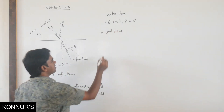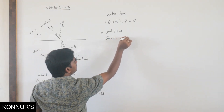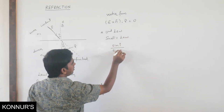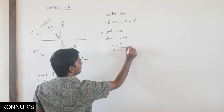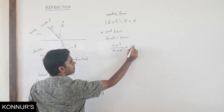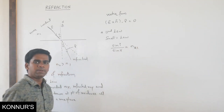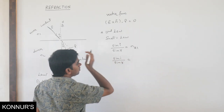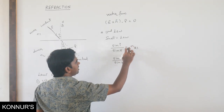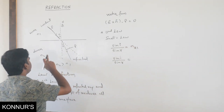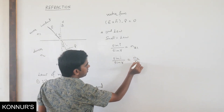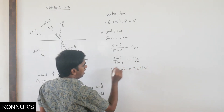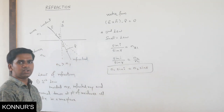The second law is Snell's law. It states that the ratio of sin of angle of incidence to sin of angle of refraction equals the relative refractive index of the second medium with respect to the first medium. So sin I / sin R = N2/N1, which gives us N1 sin I = N2 sin R.